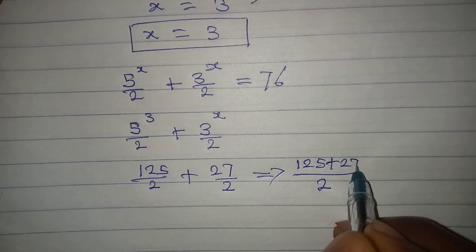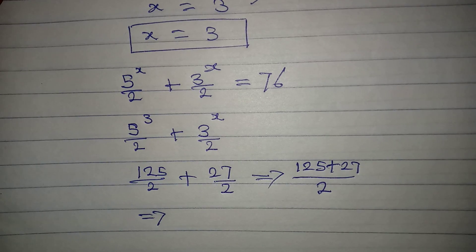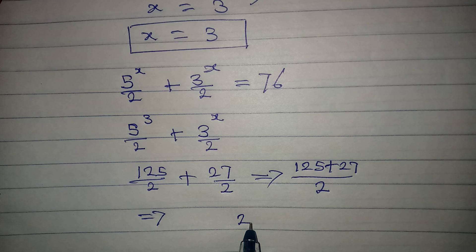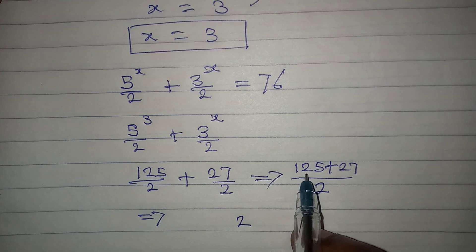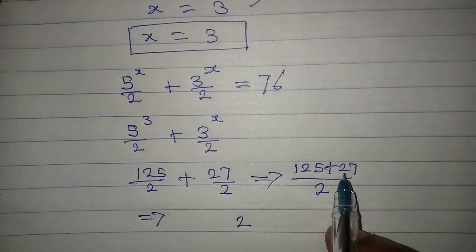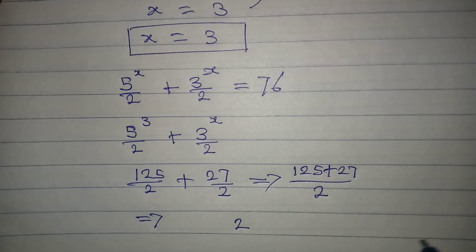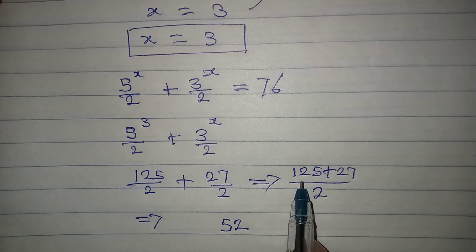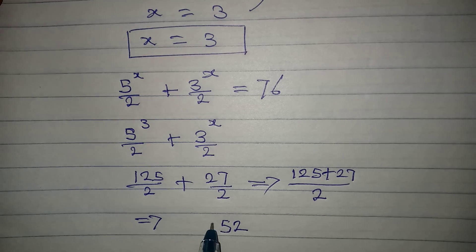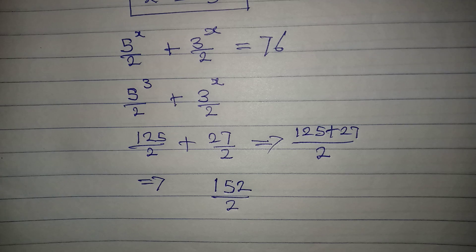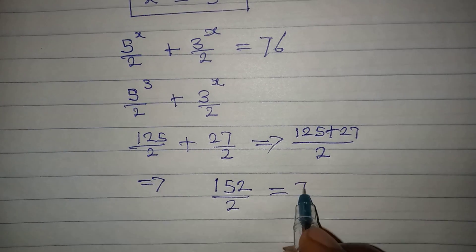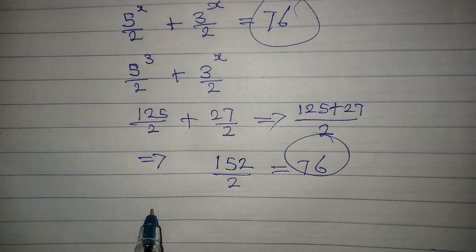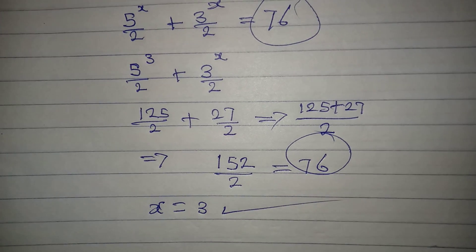We get 125 plus 27 over 2, which equals 152 over 2. Dividing gives us 76, and this is exactly what we had on the right-hand side. This confirms that x = 3 satisfies the equation.